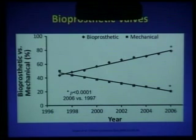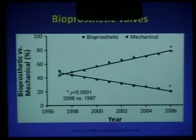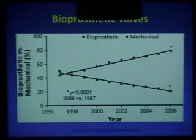Traditional textbook teaching says patients older than 65 years of age are usually recommended to get a bioprosthetic valve, whereas younger patients or those needing anticoagulation for any reason should get a mechanical valve. However, this teaching is not necessarily followed these days for various reasons, and patient preference is strongly in favor of bioprosthetic valves.